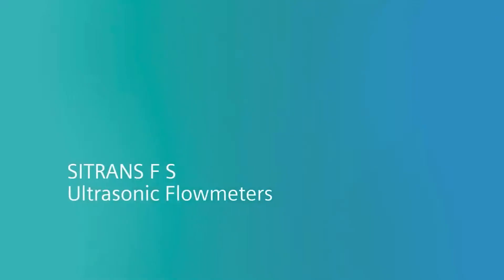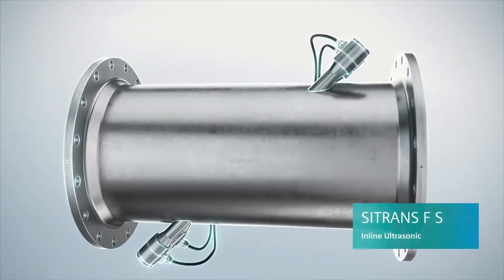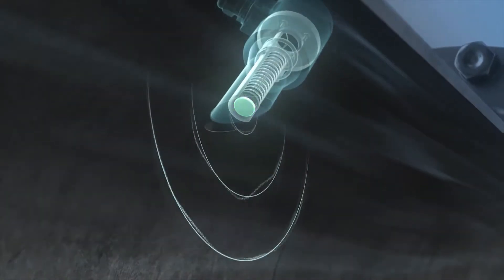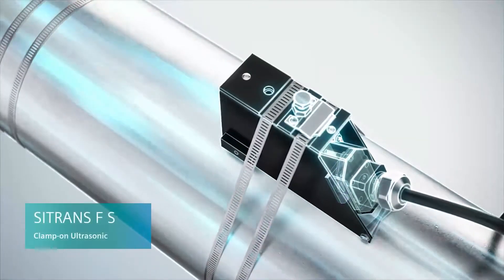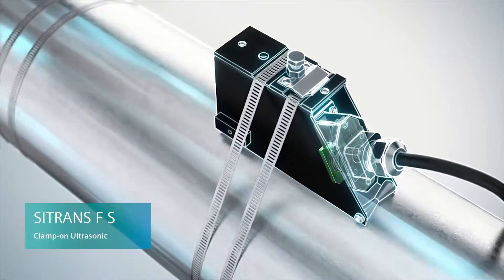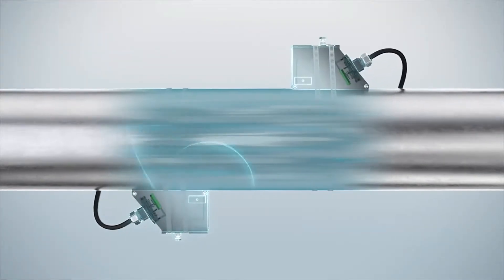The inline product family measures with very high accuracy. The sensors are in direct contact with the medium. The clamp-on version, however, uses sensors that are mounted on the outside of the pipe. Ongoing processes are not interrupted and the sensors never touch the medium.